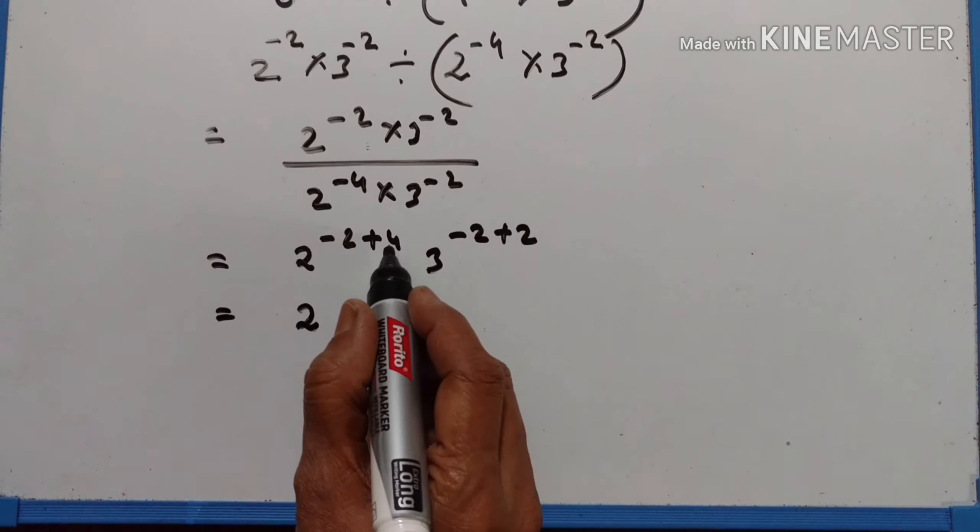5 cubed is equal to 125, into 3 squared is equal to 9. Anything raised to the power of 0 is equal to 1. Into 7 cubed — that is 49 into 7 — equals 343. So, 125 plus 9 plus 343 is equal to 477.